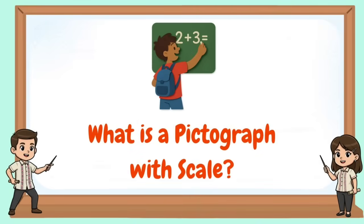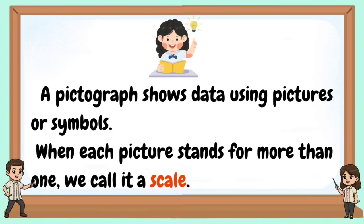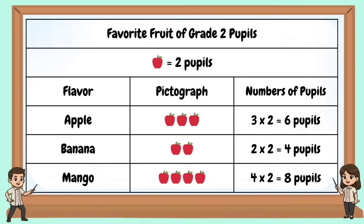What is a pictograph with scale? A pictograph shows data using pictures or symbols. When each picture stands for more than one, we call it a scale. Favorite fruit of Grade 2 pupils — each apple equals two pupils. Apple: we have three pictures, so three times two equals six pupils. Banana: we have two apples, so two times two equals four pupils. Mango: we have four pictures, so four times two equals eight pupils.